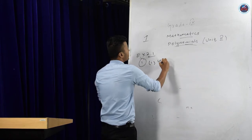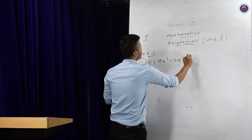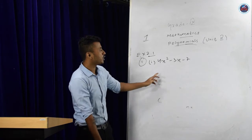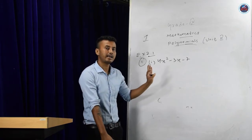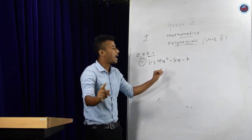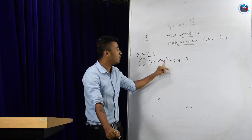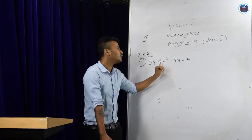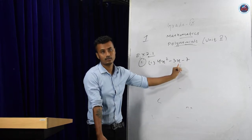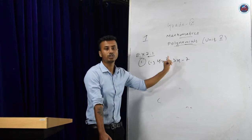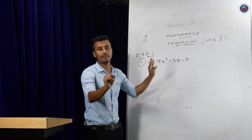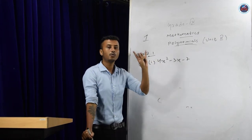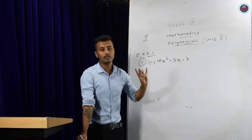The first expression is 4x² minus 3x minus 7. How many variables are here? I am not asking about terms — only variables. There is only one variable, that is x. There are two terms, but the variable is the same — only x. That is why this is an equation in one variable.